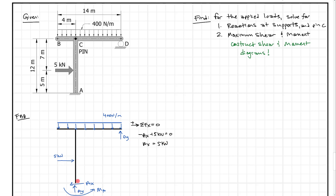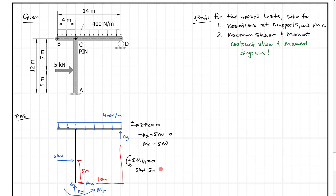We still have the problem of two unknowns — MA and DY — in the moment equation. If we take moments about point A, we get: minus five kilonewtons times five meters, plus DY times ten meters, minus the resultant of the distributed load (400 N/m × 14 m = 5.6 kN) times its moment arm of three meters, plus MA equals zero. That gives us two unknowns, so we can't solve it with just one equation.